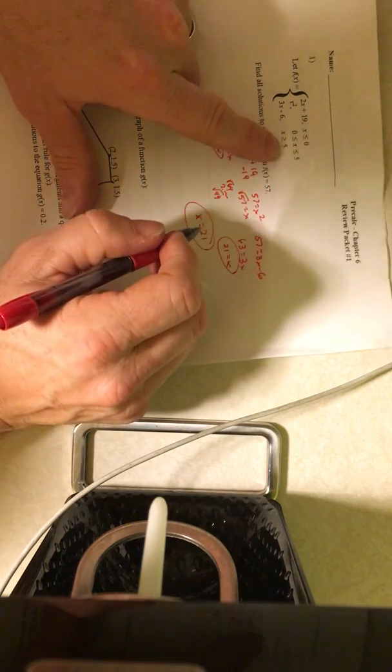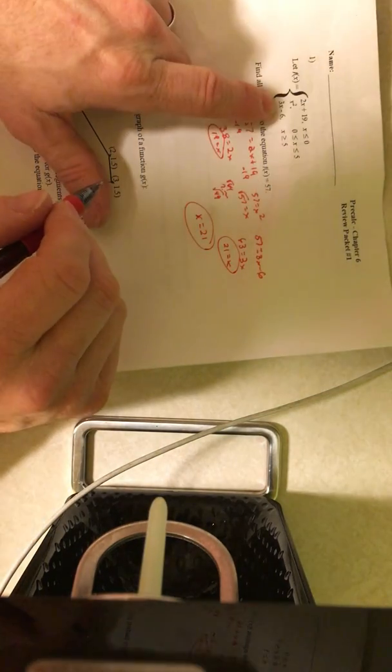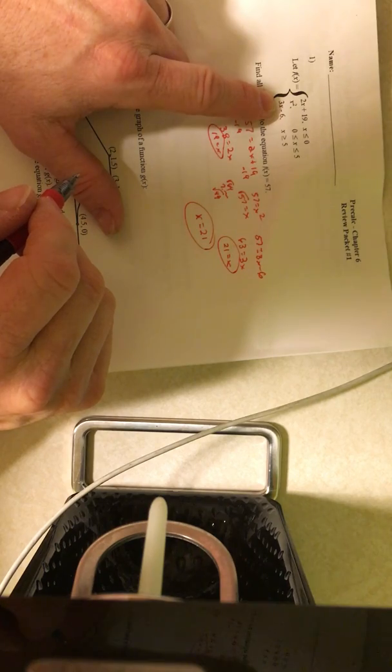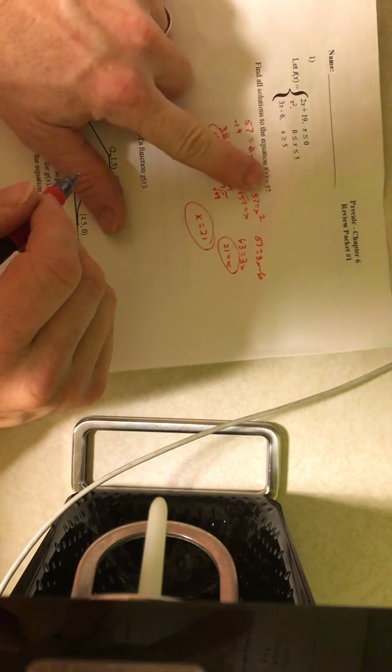And when the x value is 21, I'm directed to use this rule. I'm going to do 21 times 3. 21 times 3 is 63, and 63 minus 6 is 57.